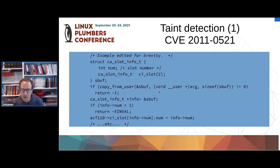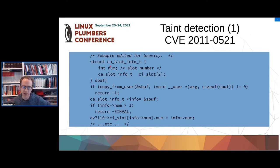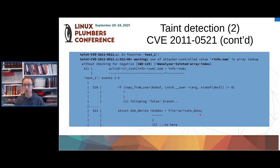For taint detection, here's an example from ten years ago: a slot integer gets copied from user space to the stack, we grab a pointer to it, do some sanitisation, and then use it to write to an array index elsewhere in the kernel. This is a bug because int is signed — although we validated it's not beyond some upper bound, it could be negative, making this an arbitrary write to somewhere in memory controlled by user space. My prototype of the analyser successfully complains about this: 'use of attacker-controlled value in array lookup without checking for negative'.